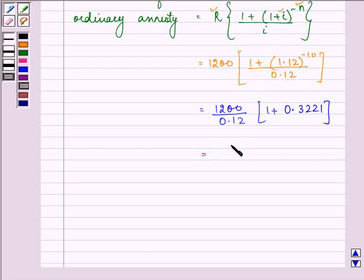Further on simplifying it, we have over here as 10000, that is after simplifying it, into 1.3221.